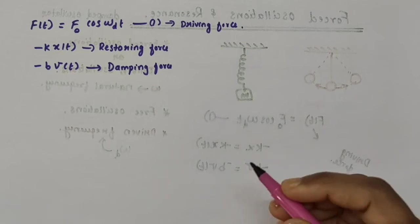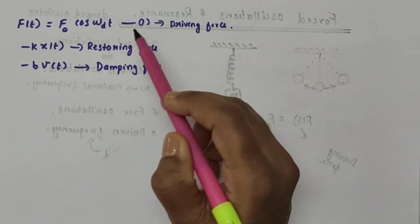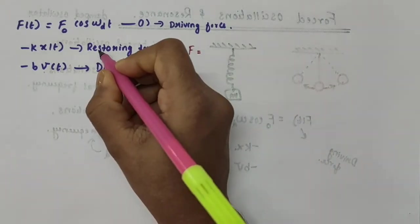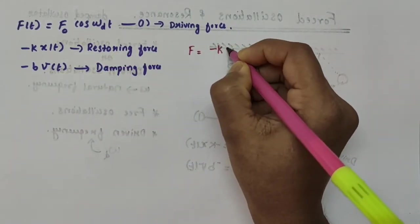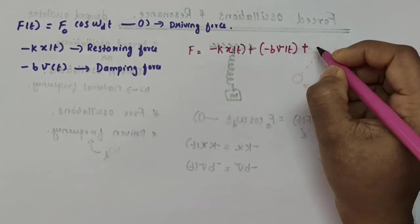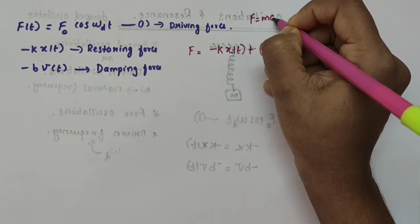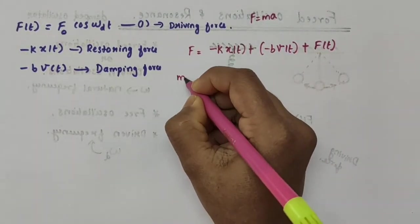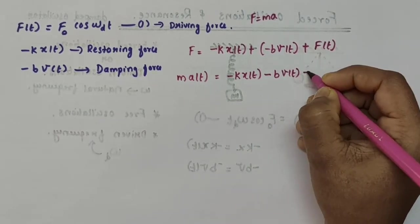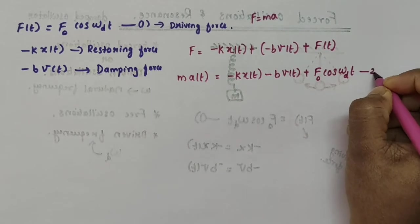The motion of a particle under the combined action of a linear restoring force, damping force, and time-dependent driving force can be written using Newton's second law as: m·a(t) = −k·x(t) − b·v(t) + f0·cos(omega_d · t). This is taken as equation number 2.